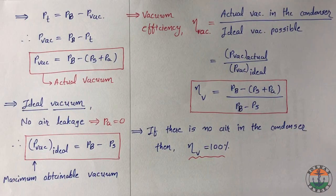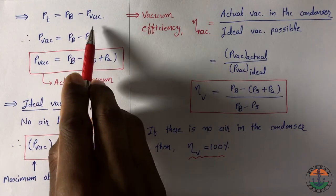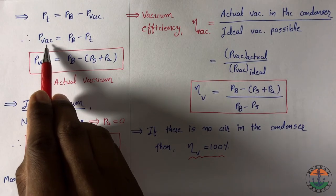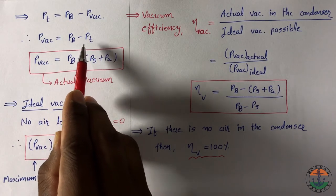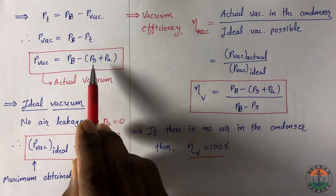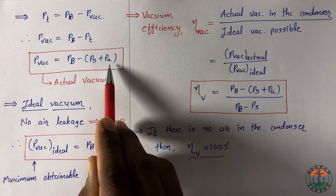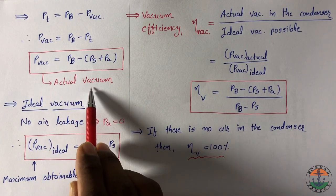From vacuum measurement, we have the equation total pressure is equal to barometric pressure minus vacuum pressure. So vacuum pressure will be Pb minus Pt, here Pt is the total pressure in the condenser which is the sum of partial pressure of steam plus partial pressure of air. So this is the actual vacuum present in the condenser.